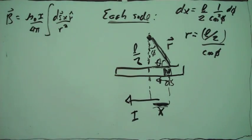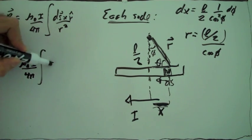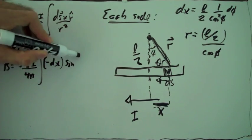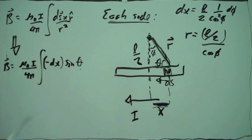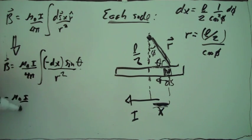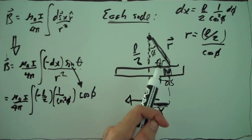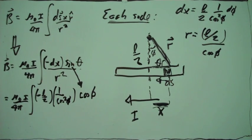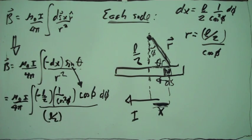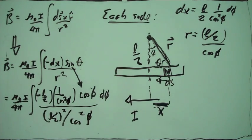Now that we have these two expressions, we write again the expression for the magnetic field. We have a term outside the integral. ds is just minus dx in this case. We have to do a cross product, so we have the sine of angle theta, and divide by R squared. We plug in what dx is into this integral. Since sine of theta equals cosine of phi — these angles are complementary — and we have an expression for R, we substitute R equals L over 2 divided by cosine of phi. That's R squared on the denominator.